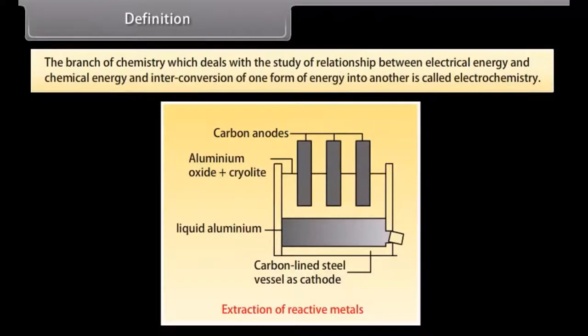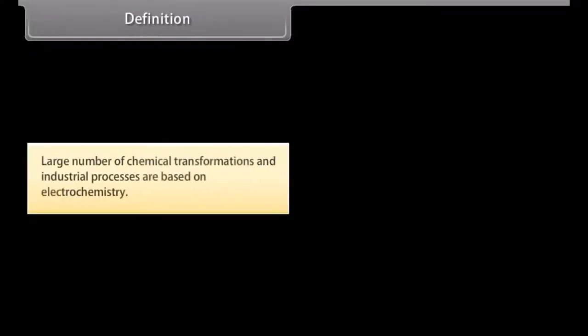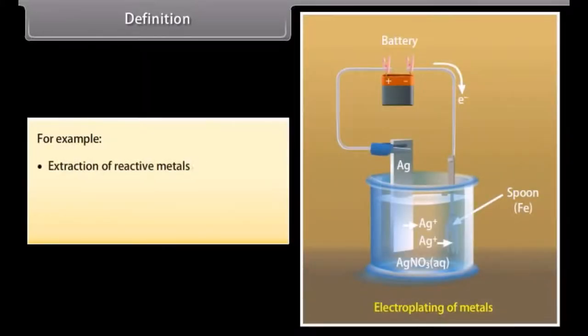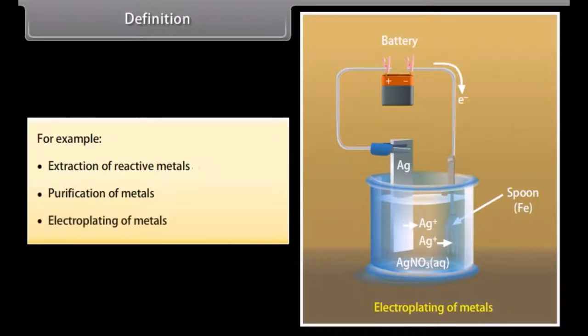Definition. The branch of chemistry which deals with the study of relationship between electrical energy and chemical energy, and interconversion of one form of energy into another, is called electrochemistry. A large number of chemical transformations and industrial processes are based on electrochemistry. For example, extraction of reactive metals, purification of metals, and electroplating of metals.